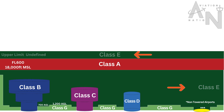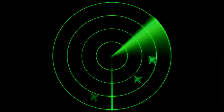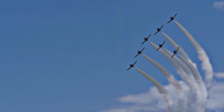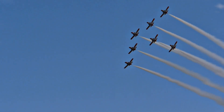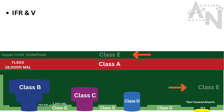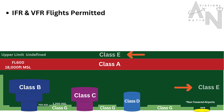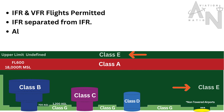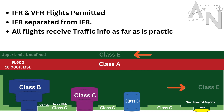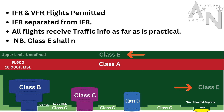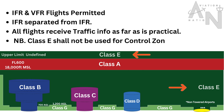Moving on to Class E airspace — it's the controlled airspace that fills the gaps between the other classes. It starts at the surface or a designated altitude and extends upwards. Class E airspace can be used for both IFR and VFR flights, and it doesn't require communication with ATC unless otherwise specified. IFR flights are separated from other IFR flights, and all flights receive traffic information as far as is practical. Note: Class E airspace is not used in control zones.